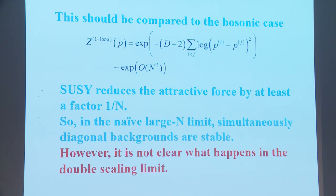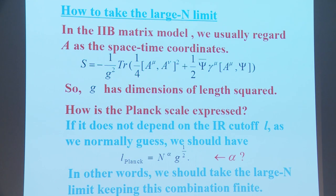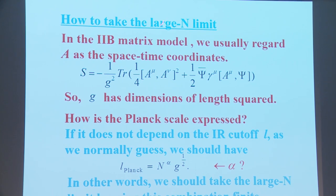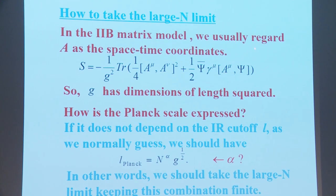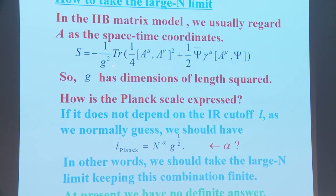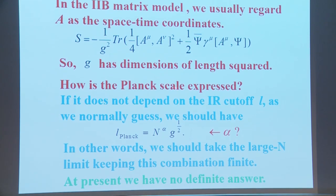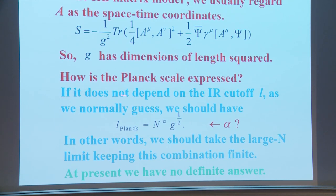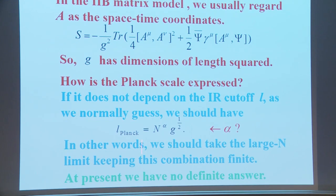The fermionic interaction is of order N, which should be compared to the bosonic case where it is of order N². So supersymmetry reduces the attractive force by at least a factor of 1/N. In the naive large-N limit, simultaneously diagonal backgrounds are stable. However, it is not clear what happens in the double scaling limit. The question of how to take the large-N limit is important: if we regard A_μ as a space-time coordinate with G² as coupling constant, G has dimensions of length². If the Planck scale does not depend on the infrared cutoff L, then from dimensional analysis L_Planck = N^α · G^{1/2}, and we should take the large-N limit keeping this combination finite.